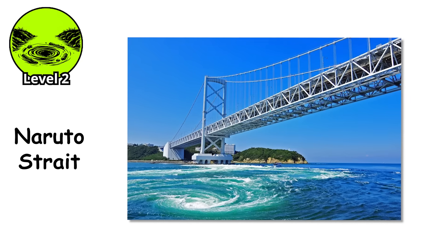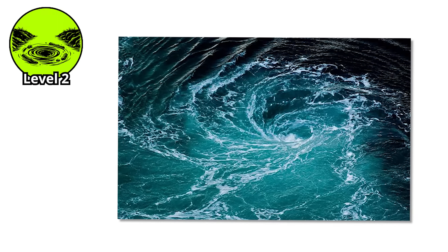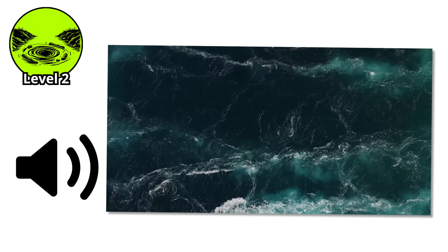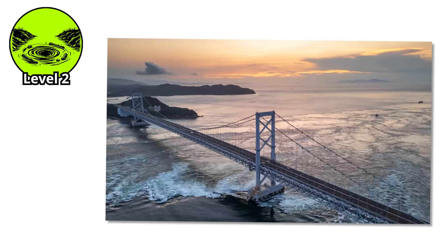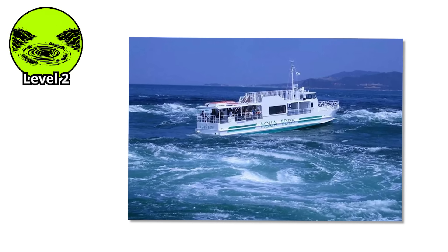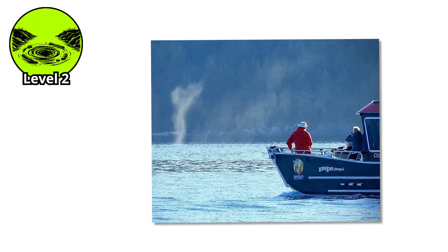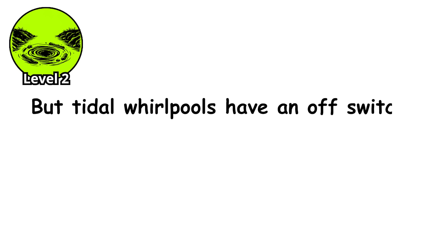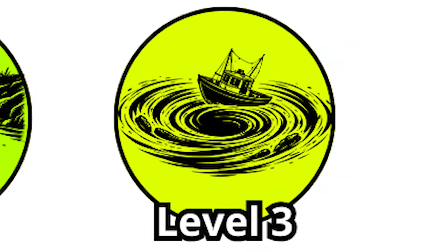In Japan's Naruto Strait, tidal whirlpools reach speeds of 15 miles per hour, creating vortexes that appear and disappear every six hours as the tide changes. The sound is loud enough to hear from shore, a roaring, churning maelstrom that's mesmerized observers for centuries. Tour boats take visitors to witness these whirlpools from a safe distance, but local fishermen know to respect the timing. But tidal whirlpools have an off switch. They come and go with the tide. What if a whirlpool never stopped spinning? Level 3.